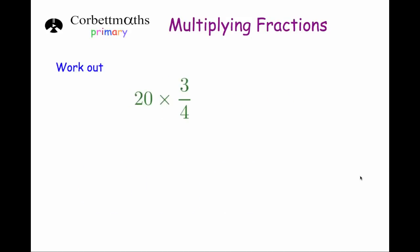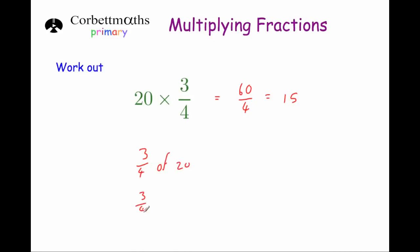Here's another example: 20 times 3 quarters. You can work this out as 20 times 3 is 60 over 4. The fraction line means divided by, so 60 divided by 4 — half of 60 is 30, and half again is 15 — giving an answer of 15. Interestingly, 3 quarters times 20 is the same as finding 3 quarters of 20.